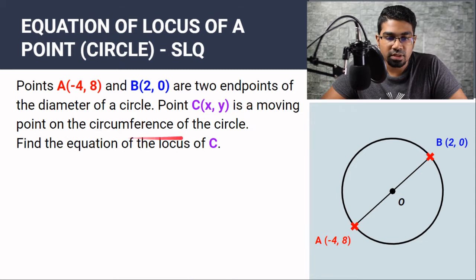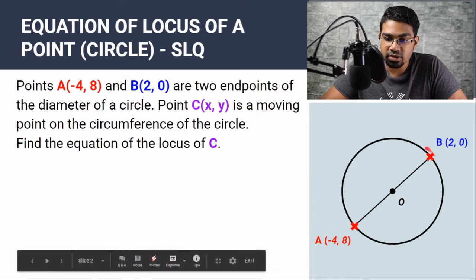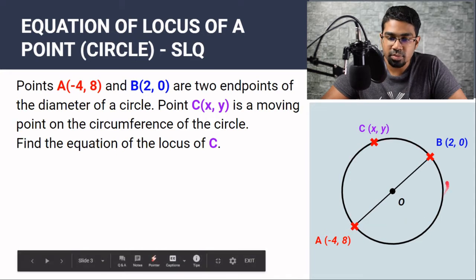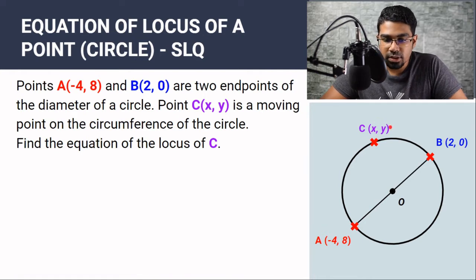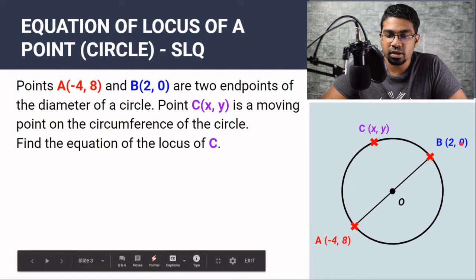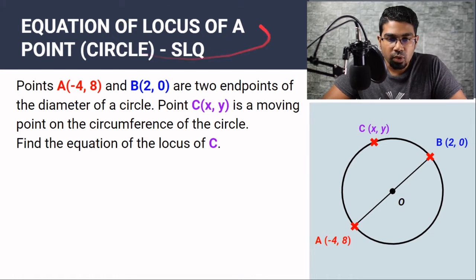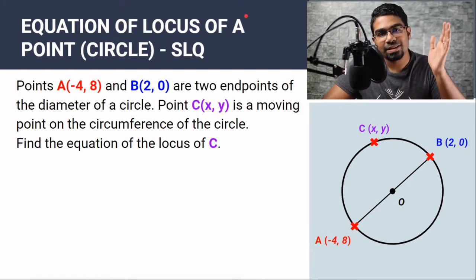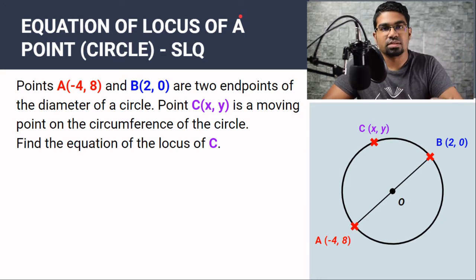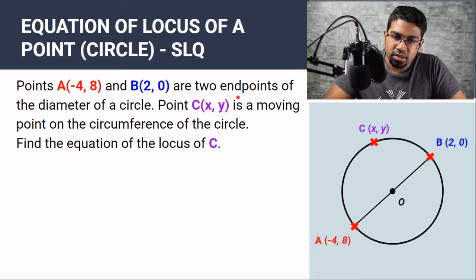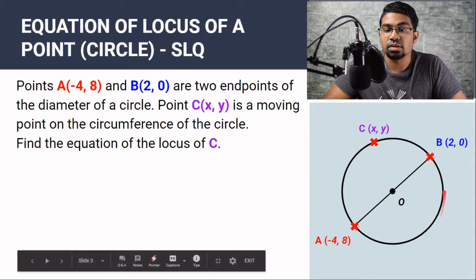C is a moving point on the circumference of the circle, so C is the point that forms the circle — all the points that make up the circle. C is anywhere on the circle; it can be anywhere as long as it is on the circle. We give the coordinates (x, y) to C. The coordinates of A and B are given to us. The equation of locus tells us the relationship between the x coordinate and y coordinate of all the points on the circle.